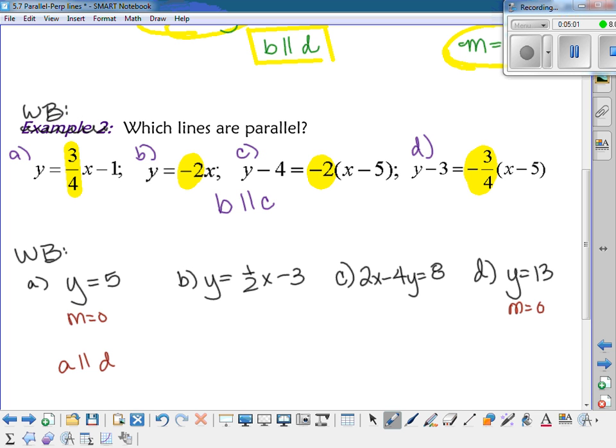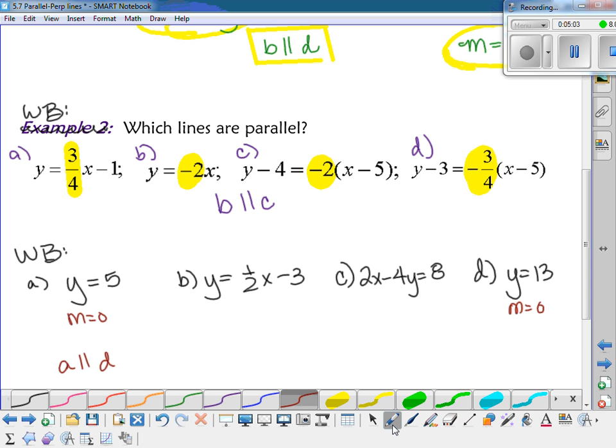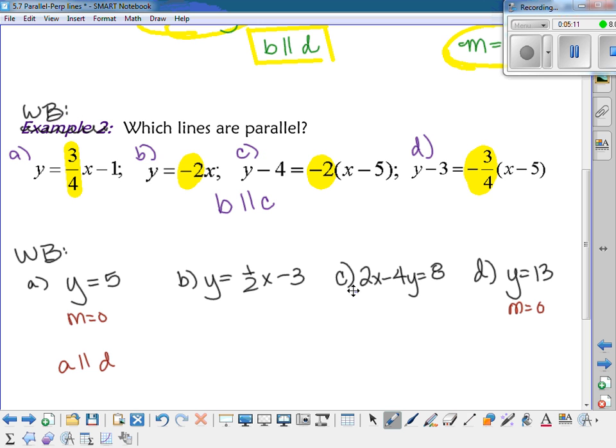Alright, but then let's take a look at B and C. Okay, so looking at C, if I get Y alone, I'm going to subtract the 2X. And then I get negative 4Y equals negative 2X plus 8. And then I divide by negative 4. So my slope is right here. It ends up reducing to a positive one half. And that's the same thing as I had for B. So B is also parallel to C. So sometimes you might have more than one pair that's parallel. So you want to be able to check all of them.